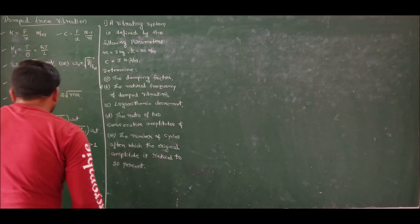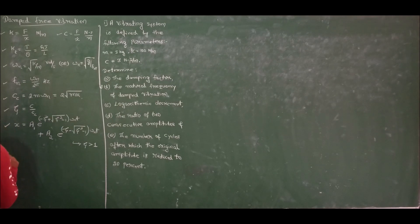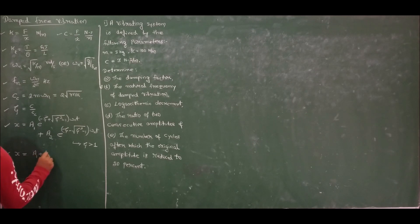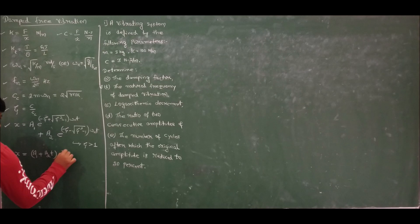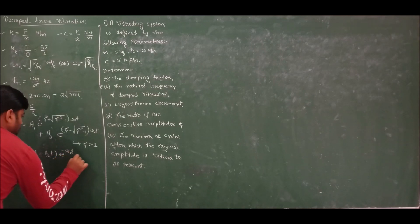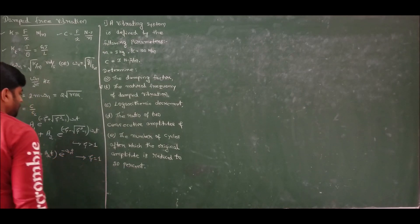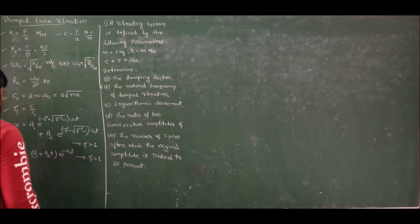For a critically damped system, the displacement x is given by (a1 + a2*t) multiplied by e^(-omega_n*t). This applies when zeta equals 1.